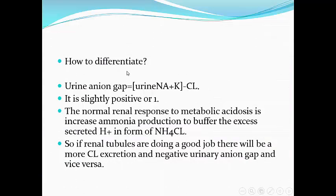How to differentiate between diarrhea and renal tubular acidosis: first, by history — does the patient have diarrhea? Second, by urine pH — if above 5.3, it goes with RTA (though in Type 2 RTA, pH can drop below 5.3 if bicarbonate is low). A patient with laxative abuse may not admit to diarrhea. To differentiate, we use the concept of urine anion gap: urine anion gap equals urine sodium plus potassium minus chloride.